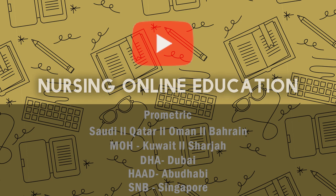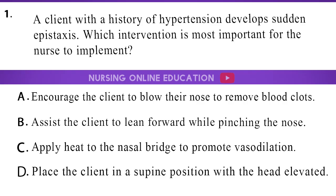Here is our first question. A client with a history of hypertension develops sudden epistaxis. Which intervention is most important for the nurse to implement? A. Encourage the client to blow their nose to remove blood clots. B. Assist the client to lean forward while pinching the nose. C. Apply heat to the nasal bridge to promote vasodilation. D. Place the client in a supine position with the head elevated.